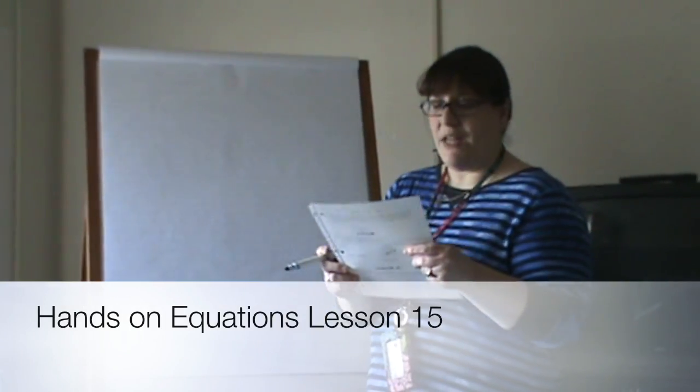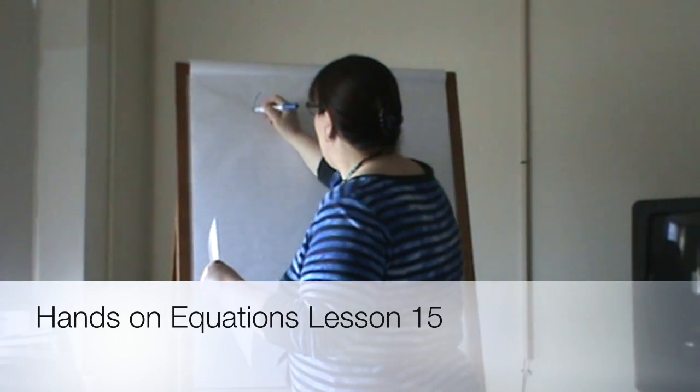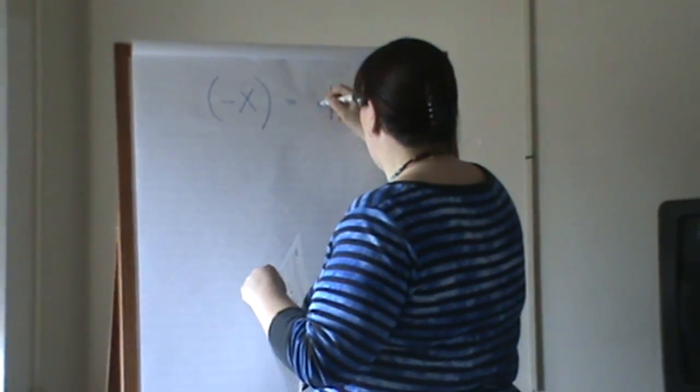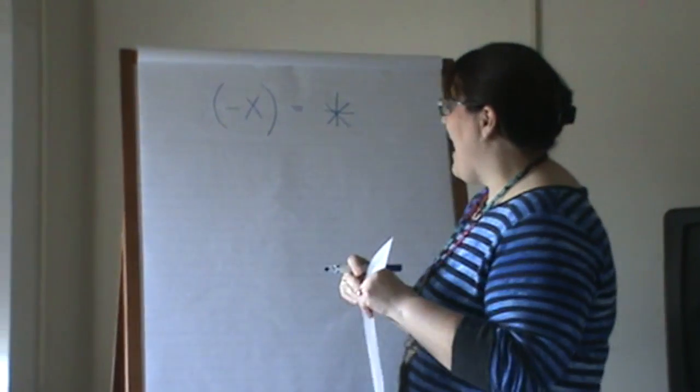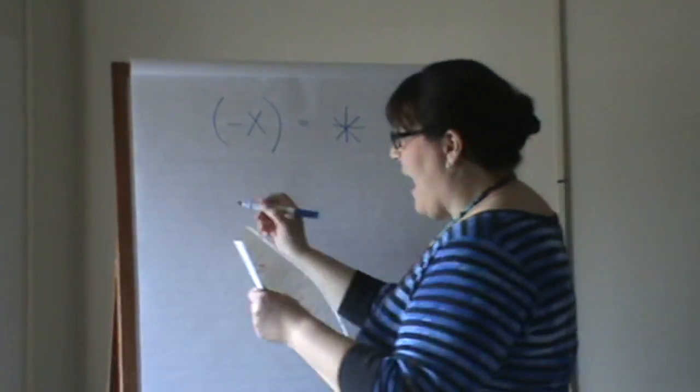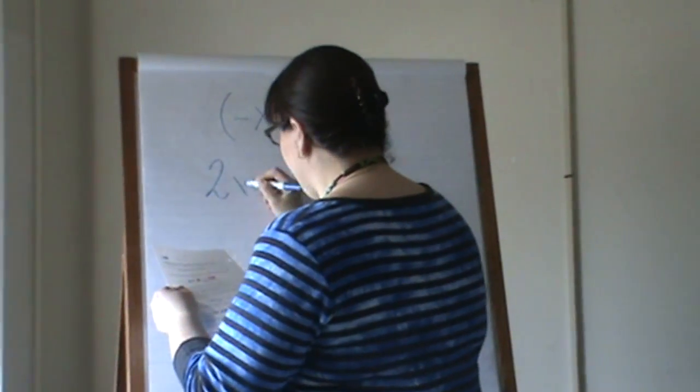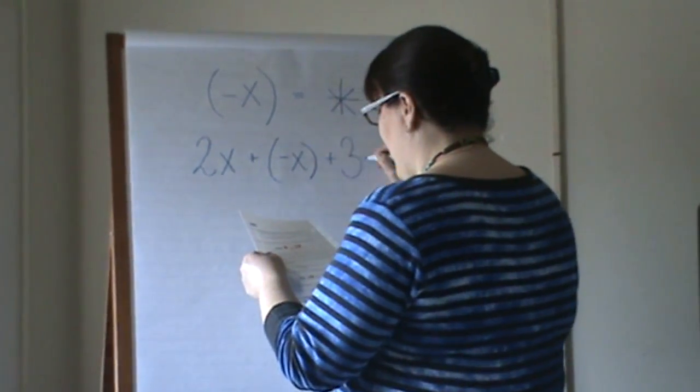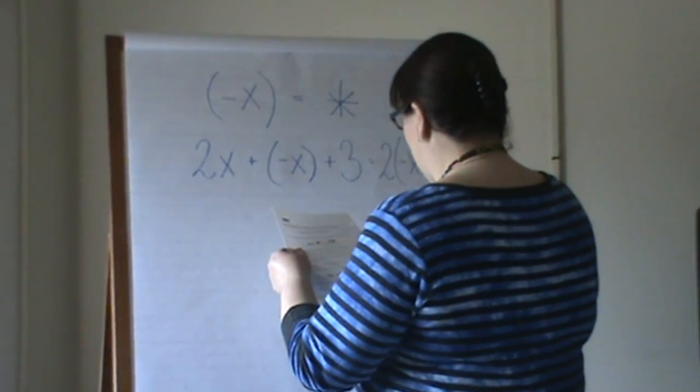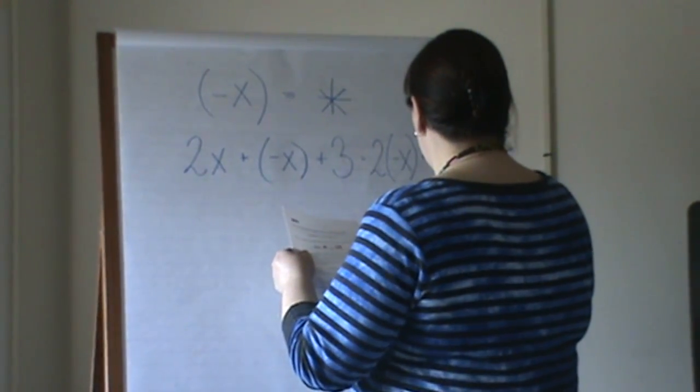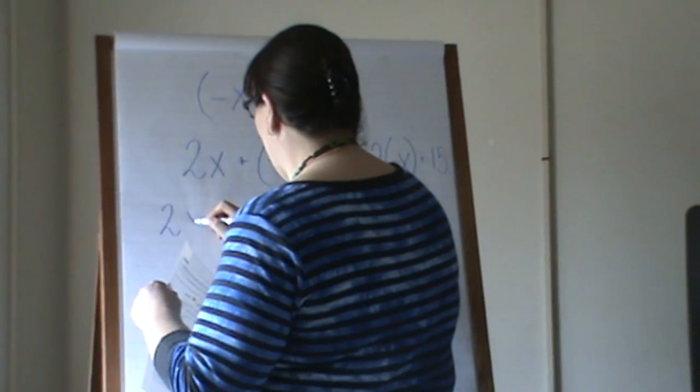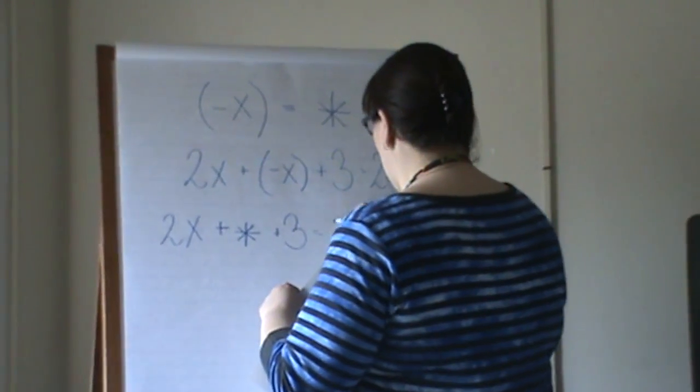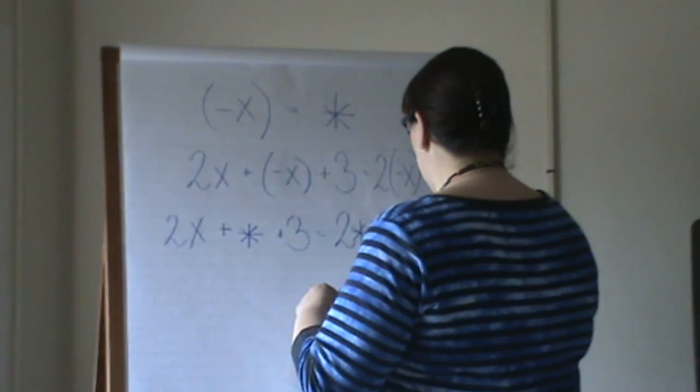Okay, this is lesson 15 of Hands-On Equations, and today you're going to learn that negative x is the same as your star. Negative x is the same as your star. So, if I write the equation, 2x plus negative x plus 3 equals 2 negative x's plus 15, it's the same as writing 2x's plus star plus 3 equals 2 star plus 15.